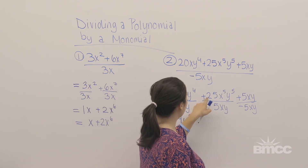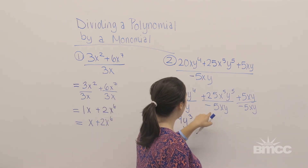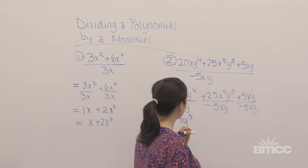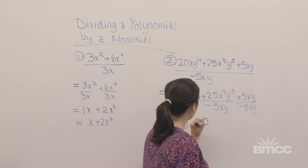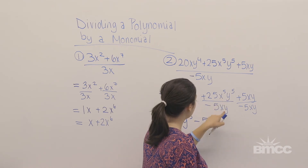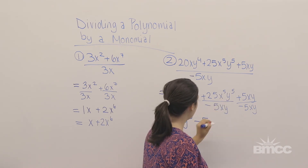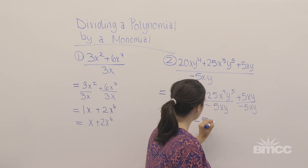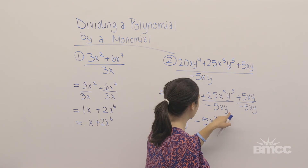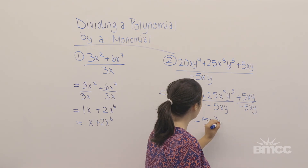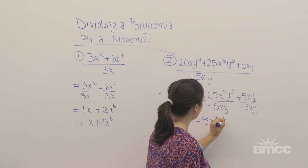Now for this term I have 25 divided by negative 5, which is negative 5. x to the 5th divided by x is x to the 4th, and y to the 5th divided by y is y to the 4th.